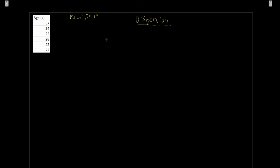Couldn't we just find the average deviation — that is, the average distance from, say, observation 24 from the mean? Couldn't we figure out this average deviation by taking the summation of each observation from our sample mean, and then since we have six observations, just divide by six?